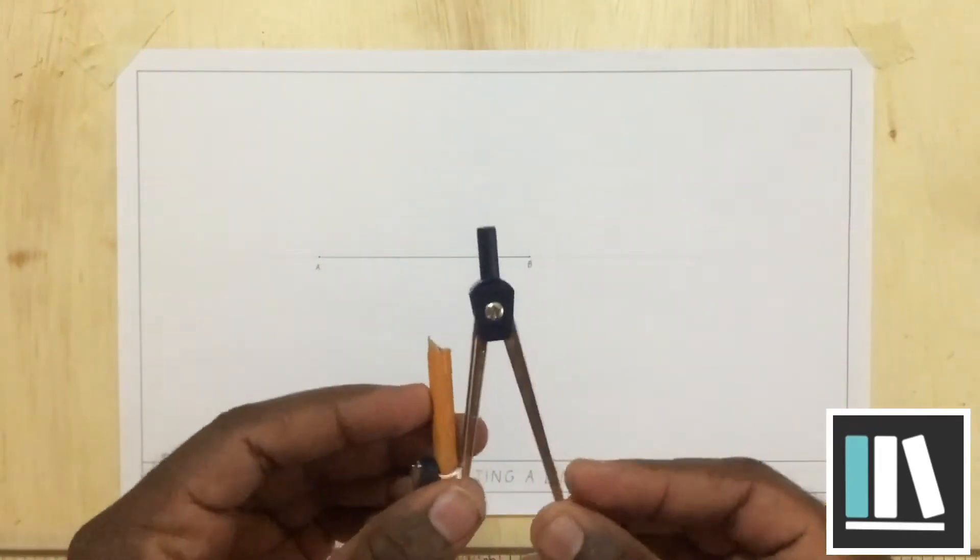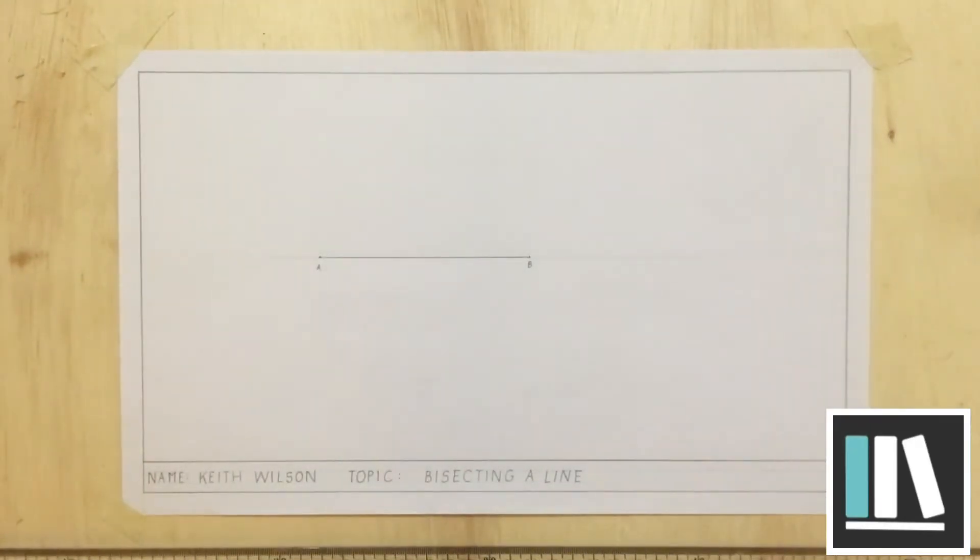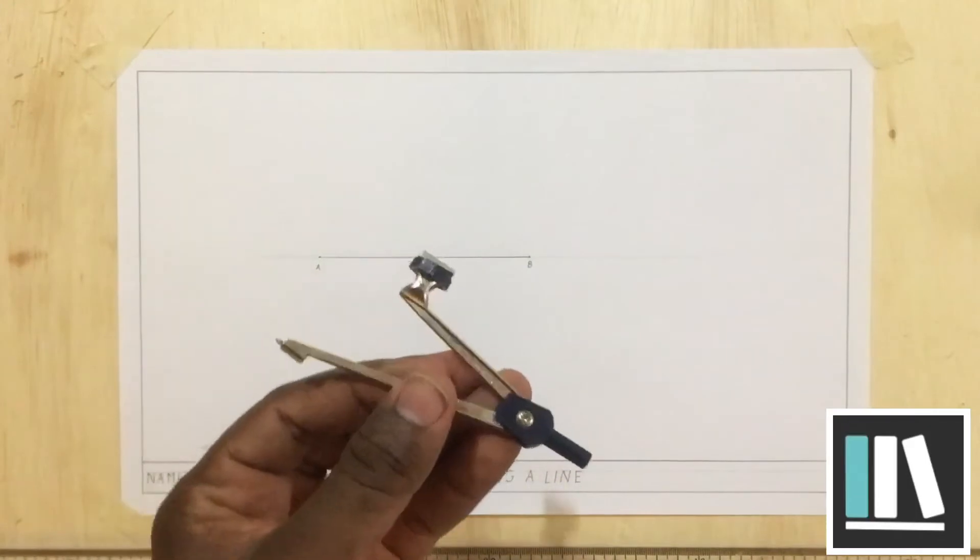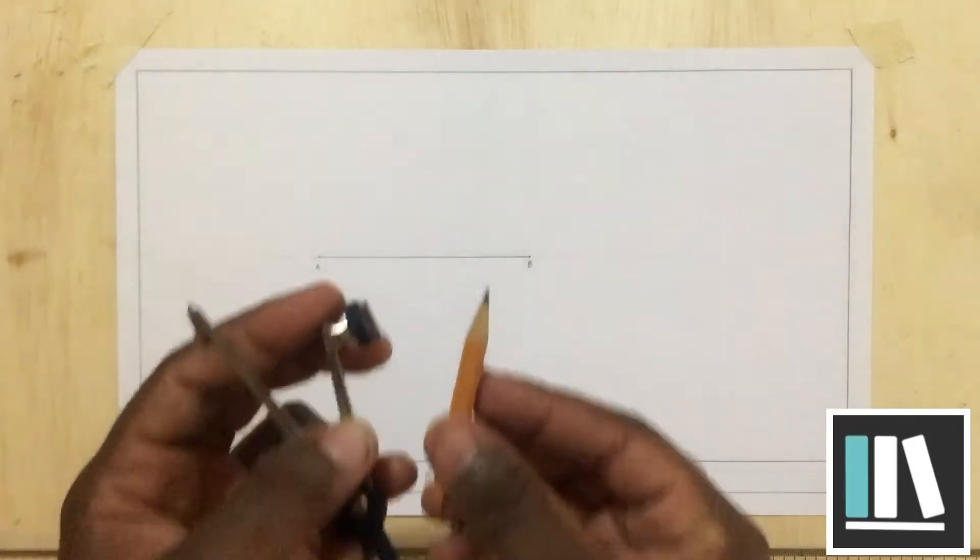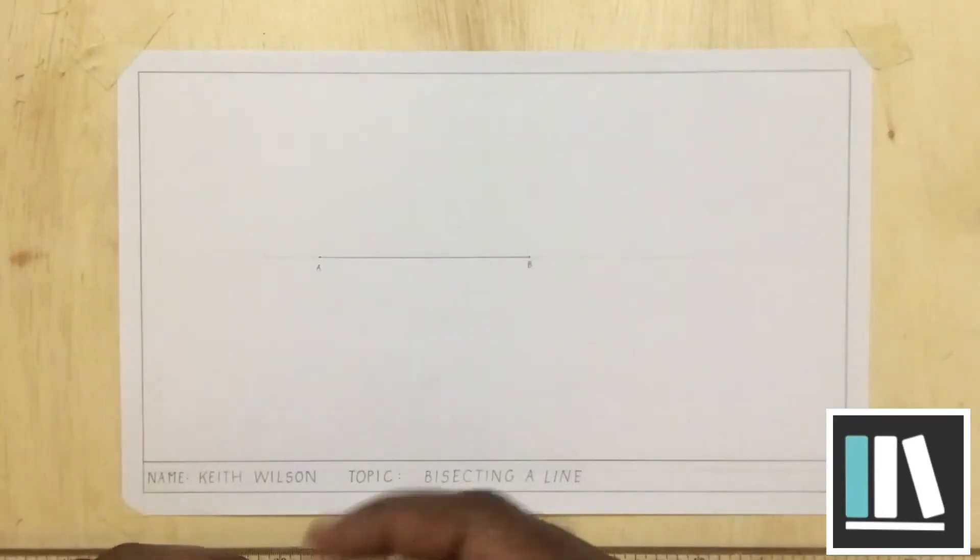Any compass can be used for this exercise. But, I am recommending the compass that is referred to as the bow compass. You can go ahead on Google and find out the compass that goes by that name. Alternatively, the compass that is found in your geometry set can also be used. It is a more economic option.